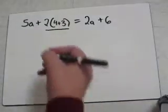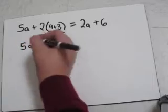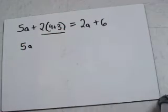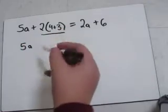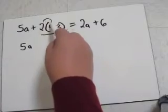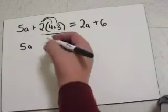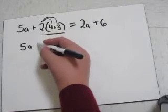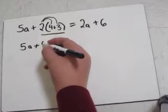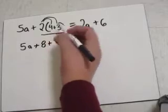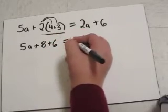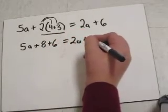So we'll start by putting what we have first, what we already have there, and then we'll distribute. And to distribute, we will multiply the two to both numbers inside the parentheses. So now we have two times four is eight, plus two times three, which is six, is equal to 2A plus 6.